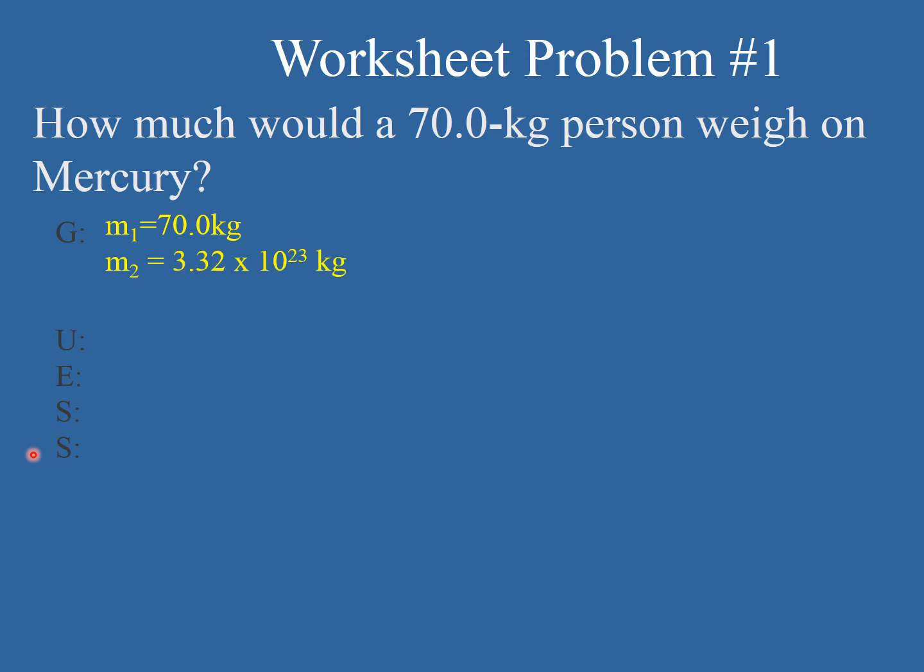They're standing on Mercury, so M2, we need to know the mass of Mercury, 3.32 times 10 to the 23rd kilograms. That number is right up on the top of your worksheet. The distance to the center of Mercury, if you're standing on the surface, is just the radius of Mercury, and that's 2.44 times 10 to the 6 meters. That's the distance from your belly button to the center of Mercury. Our unknown is the force of gravity on Mercury, which is the weight on Mercury. The equation we're going to use, the force of gravity, is equal to G, that's big G, not little G, times M1 times M2 divided by the distance squared.